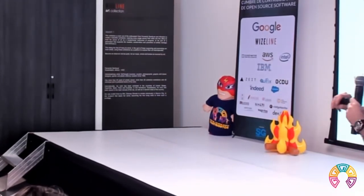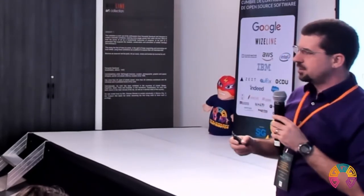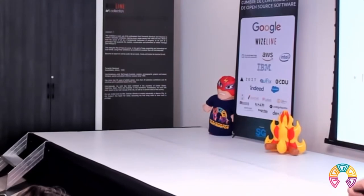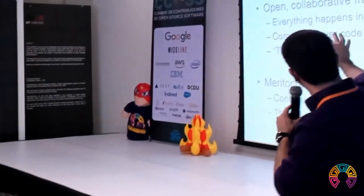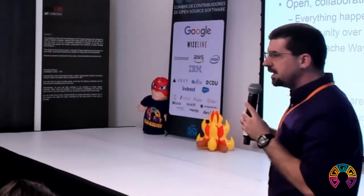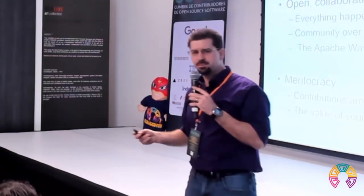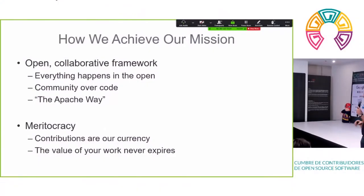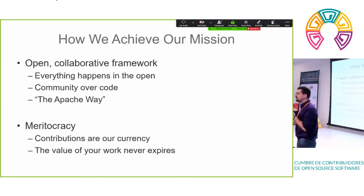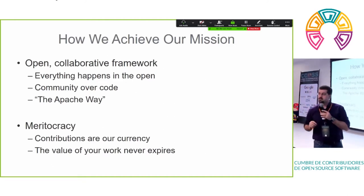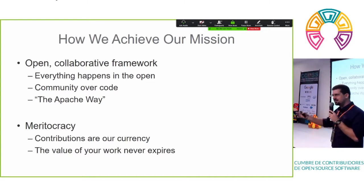How do we do it? We have this open collaborative framework we call the Apache Way — Sam is going to talk about that after this talk. When we say open, we mean everything happens in the open; no decisions are made behind closed doors. We put everything on mailing lists — yes, email, we still use it. We store that forever, so we can always go back and understand why decisions were made, and it gives everybody the opportunity to participate.